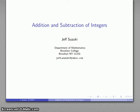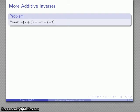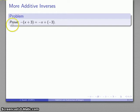Let's take a look at addition and subtraction of the integers. In order to proceed, we want to go back to our idea that the negative symbol is an indicator that we're looking at the additive inverse of a quantity. All of the problems we'll be taking a look at involve this idea that we're going to prove a particular property.